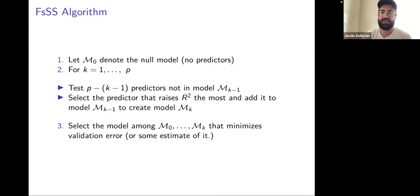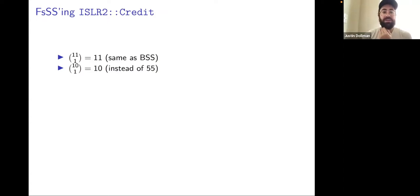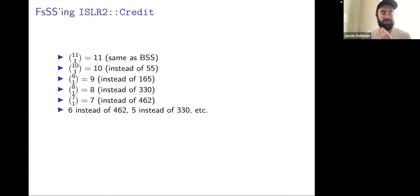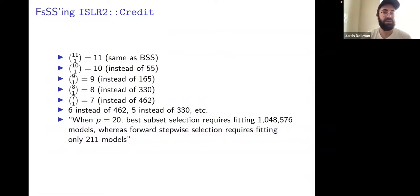In comparison, for the credit dataset with 11 predictors, at the first step you still test 11 models. But then: only 10 instead of 55 for the best two-predictor model, and nine instead of 165 for the best three-predictor model. When the number of predictors is 20, best subset selection requires fitting over a million models, whereas forward stepwise requires fitting only 211.